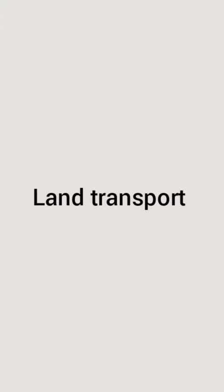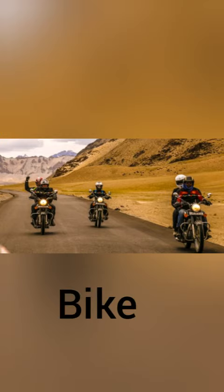Today we are going to see Land transport and the vehicles that are used on land for transport. Bicycle — a person can comfortably travel a distance using a bicycle. Bike — two persons can travel on a bike. Wear a helmet while travelling on a bike. Auto — three people can travel in an auto.